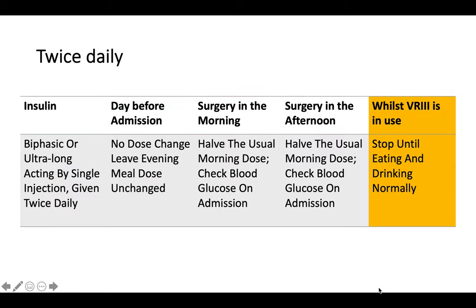For patients on biphasic or ultra-long-acting insulin given twice daily: the day before surgery the dose is unchanged. If surgery is in the morning, give half the usual morning dose and check blood glucose. If surgery is in the afternoon, give half the usual morning dose and check blood glucose on admission. While on VRI, omit the twice-daily insulin until the patient is eating and drinking.